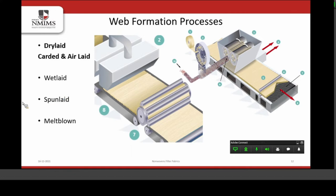On the left-hand side image, we can see the fibers are first opened and converted into a lap. This lap is fed to a carding machine, where carding rollers perform thorough opening, individualization, and ultimately give us a fibrous web. In another type of web formation — air laid — suction air is used to form a fibrous web. Condenser cages are used to collect fibers on their surface. When the required thickness is achieved, this web is pulled out and we get a uniform web on the surface of the conveyor belt.